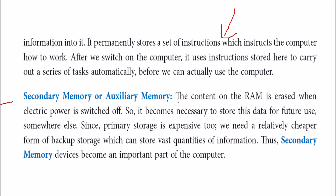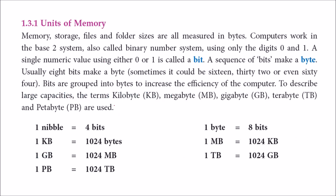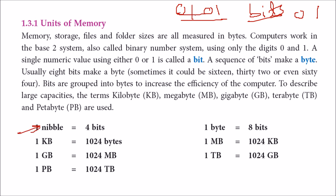Secondary memory, also called auxiliary memory, is needed because RAM content is erased when power is switched off. Primary storage is expensive, so we need backup storage — that is secondary memory. Regarding memory units: 0s and 1s are bits (binary digits). Four bits form a nibble; 8 bits form one byte. 1000 bytes is a kilobyte, 1000 kilobytes is 1 MB, and the scale continues up to 1 petabyte.